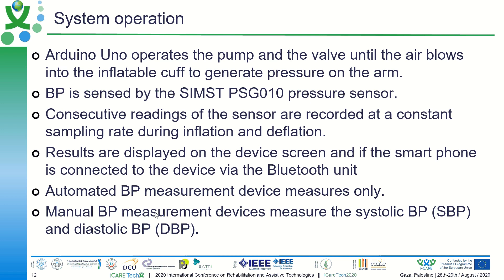The automatic or electronic blood pressure measurement system, as the one we implemented, measures only mean arterial pressure (MAP). It does not measure systolic or diastolic blood pressure directly. Only manual devices measure systolic and diastolic. However, this is not a big deal, because what we are interested in is MAP, and there are algorithms which extract systolic and diastolic blood pressure from the MAP.